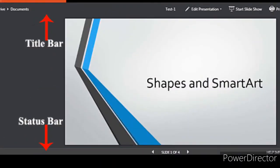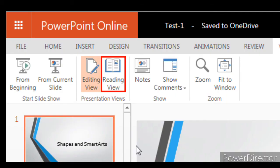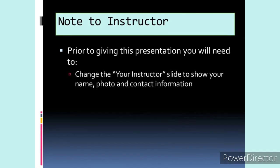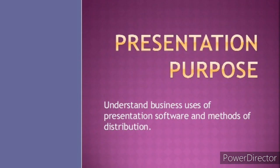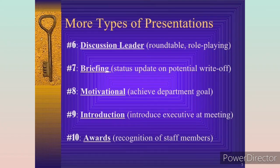You can check all your animations and transitions in Reading view, but you cannot edit your presentation. You can go to Reading view by going to the View tab and clicking on Reading View. Slideshow view is the traditional slideshow view available in earlier versions of PowerPoint. This view is used to run the slideshow during a presentation. To move to the next or previous slide, use the arrow keys. To exit the presentation at any time, click on the Escape key.